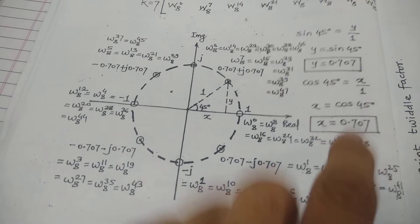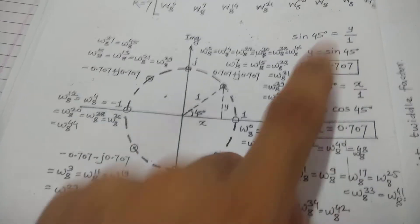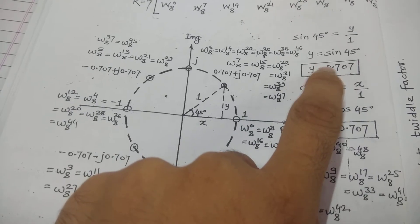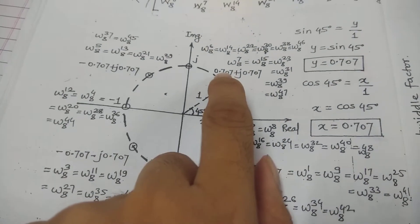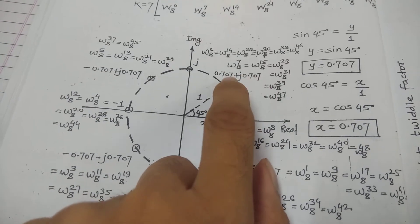After getting these two things ready, you can just write x and y. X is your real and y is imaginary, so if you are writing imaginary, then 0.707 plus imaginary j times 0.707.